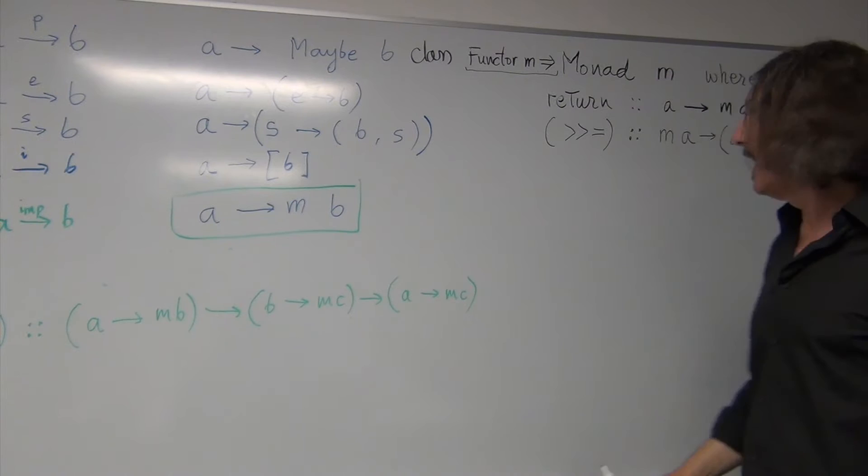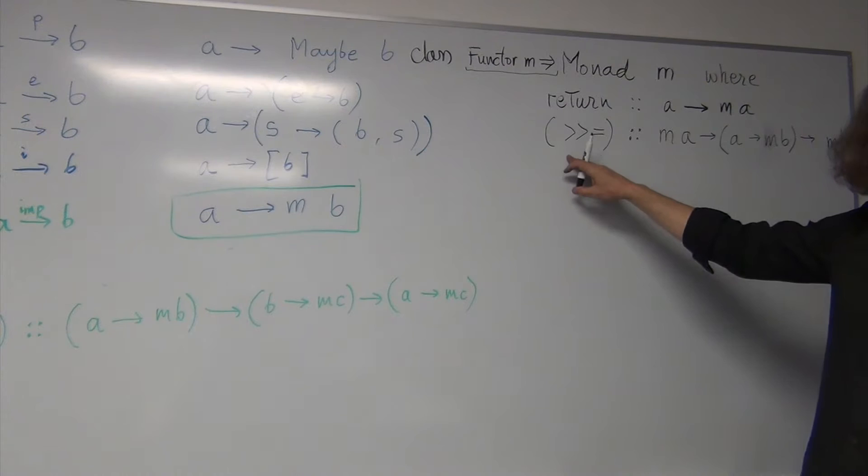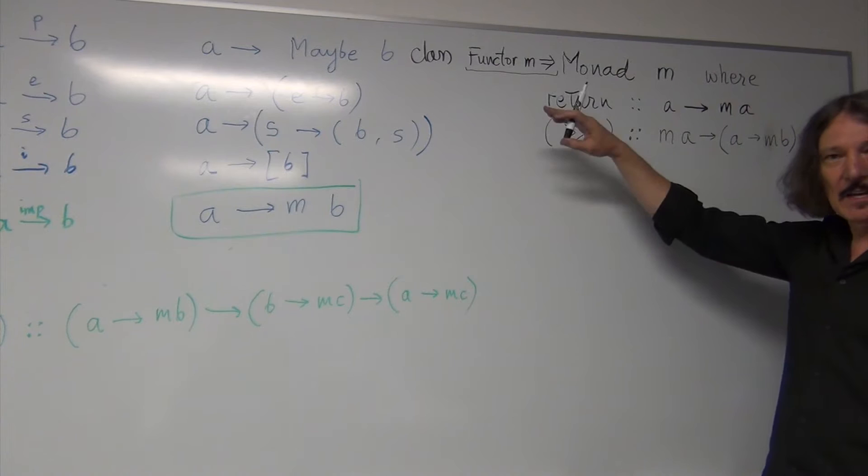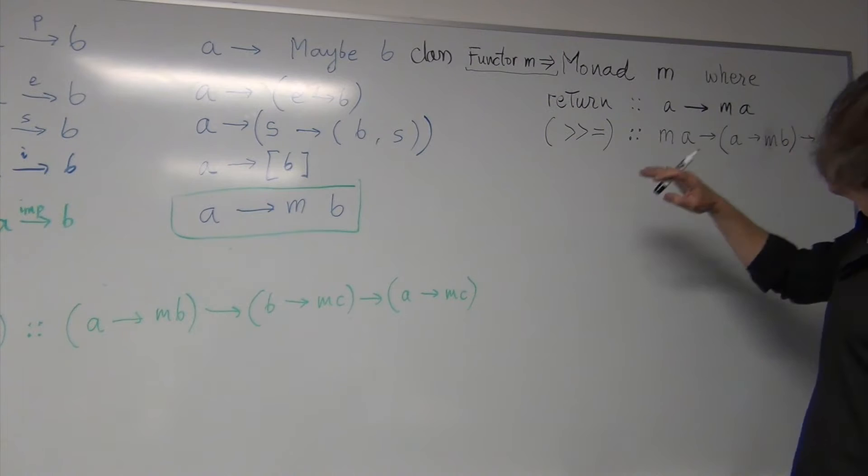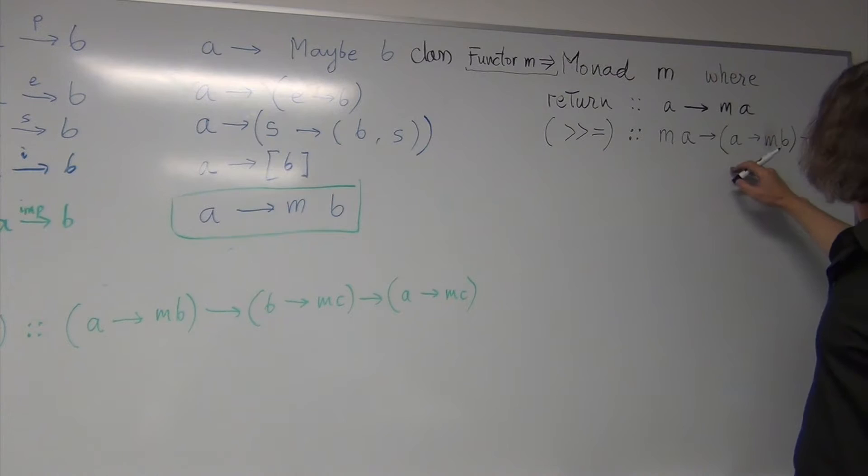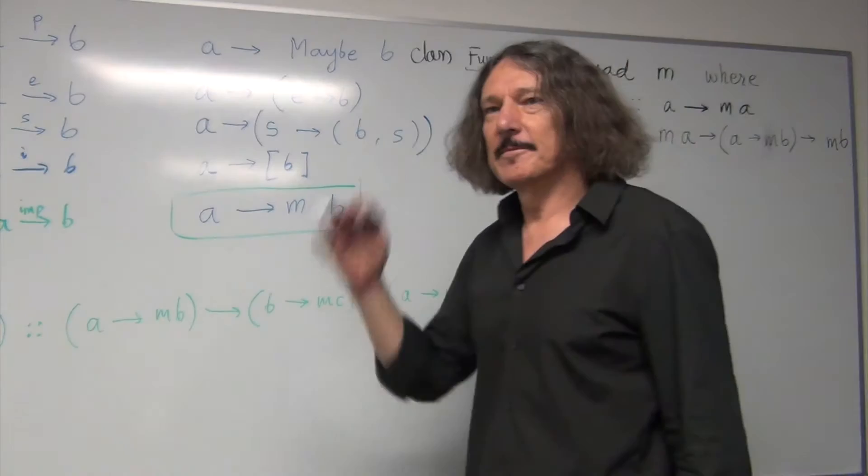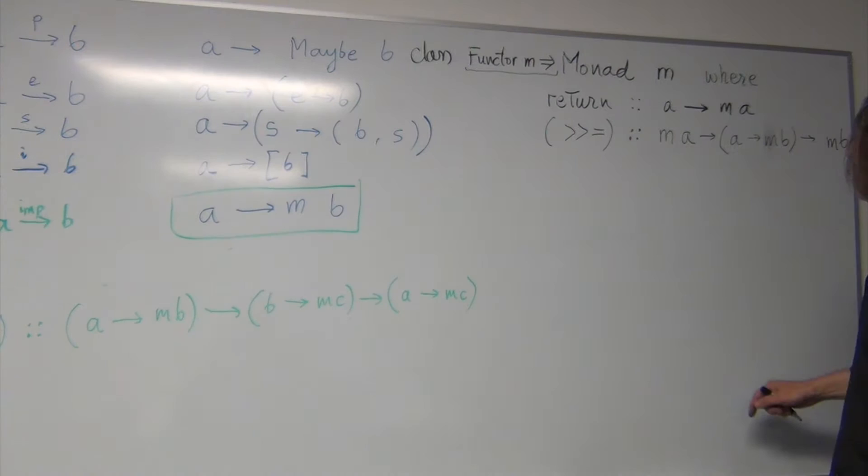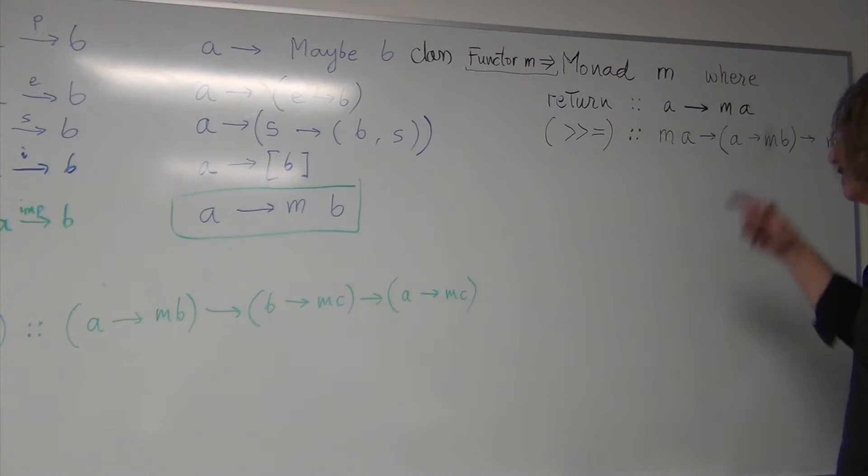And you can see, kind of, that it's really easy to define a Kleisli arrow if you have bind. You kind of have to write a lambda. Because you want to return a function. So, you return lambda that takes a. And then it applies this function. It binds it with this and so on. Homework.